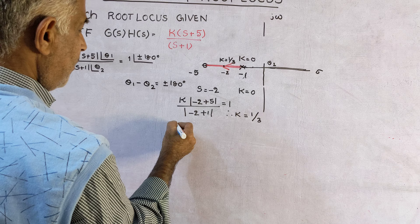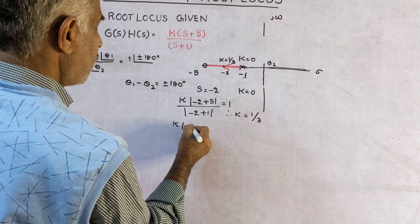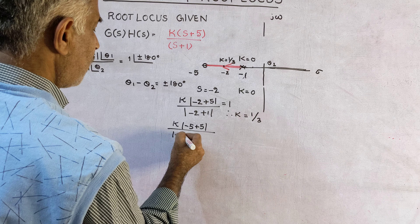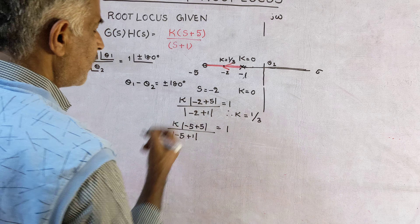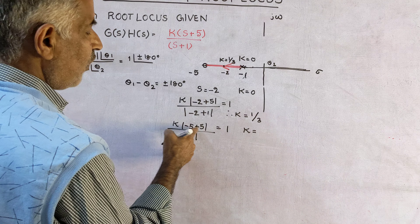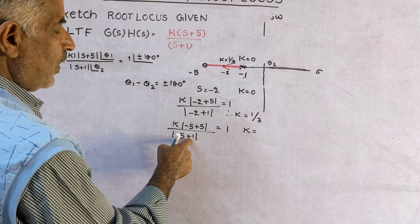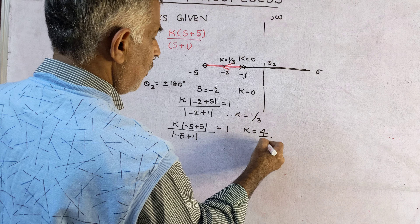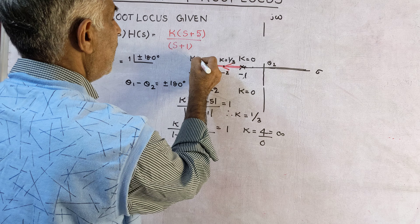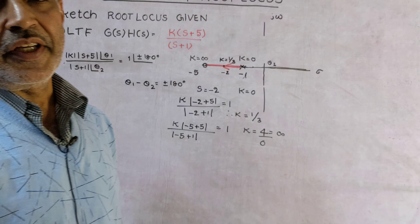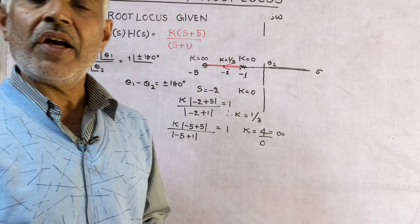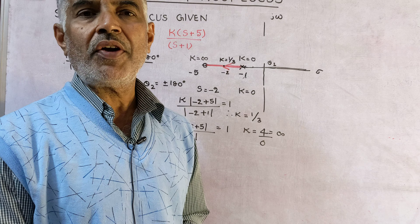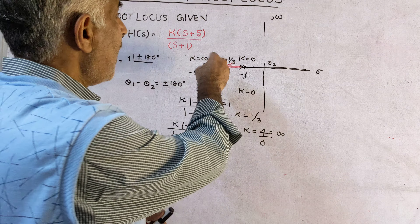Now apply the magnitude criterion to find the values of k. At s equal to minus 1: mod k times mod(minus 1 plus 5) divided by mod(minus 1 plus 1) equals 1. Since minus 1 plus 1 equals 0, k equals 0. This confirms that root locus branches always originate at the poles of G(s)H(s) with k equal to 0.